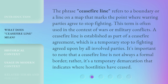The phrase Ceasefire Line refers to a boundary or a line on a map that marks the point where warring parties agree to stop fighting. This term is often used in the context of wars or military conflicts. A ceasefire line is established as part of a ceasefire agreement, which is a temporary stop to fighting agreed upon by all involved parties. It's important to note that a ceasefire line is not always a formal border. Rather, it's a temporary demarcation that indicates where hostilities have ceased.